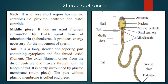The second part is the neck — a very short region having two centrioles: the proximal centriole and distal centriole. Then there is the middle piece, which has an axial filament surrounded by 10 to 14 spiral turns of mitochondria called nebenkern. The main function of these mitochondria is to provide the energy necessary for the movement of the sperm.